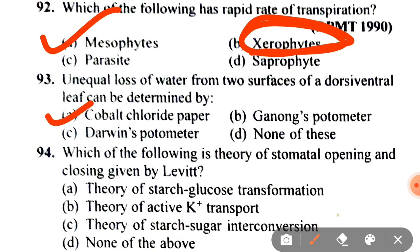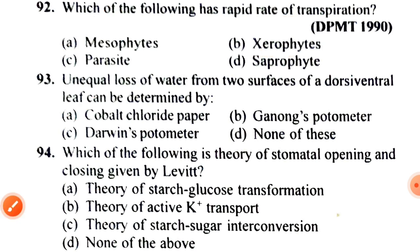Next: which of the following is the theory of stomatal opening and closing given by Levitt? A. Theory of starch-glucose transformation, B. Theory of active K+ transport, C. Theory of starch-sugar interconversion, D. None of the above. The correct answer is B — theory of active K+ transport.